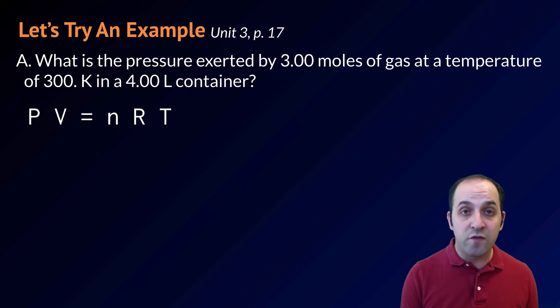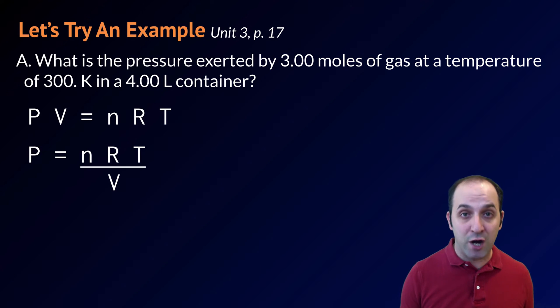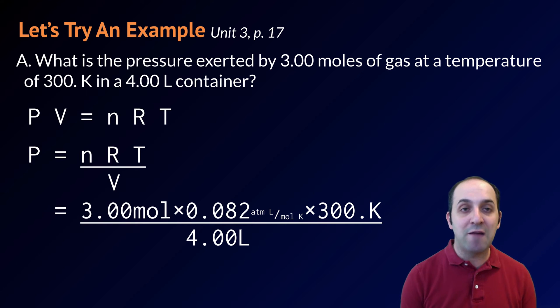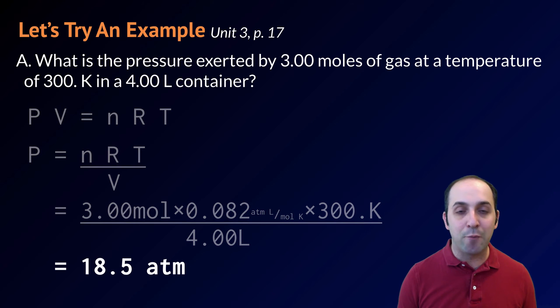For this problem, we're going to use the combined gas law, PV equals nRT. I'm looking for the pressure. So the pressure isolated by itself is equal to nRT divided by V. Substituting in my values, I get that the pressure will be equal to 3 moles times 0.082 atmosphere liter per mole Kelvin, or R value, times 300 degrees Kelvin divided by 4 liters. Doing that math, I get that the pressure is equal to 18.5 atmospheres. Does this make sense? Take a moment and write down any questions you have before we move on.